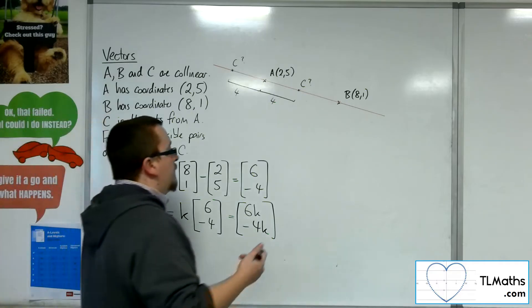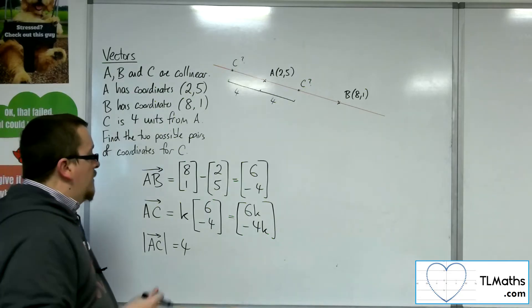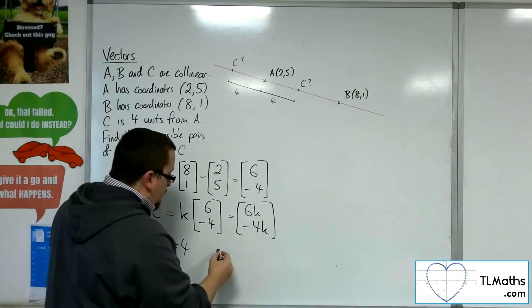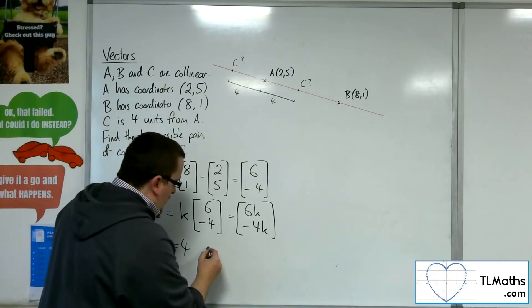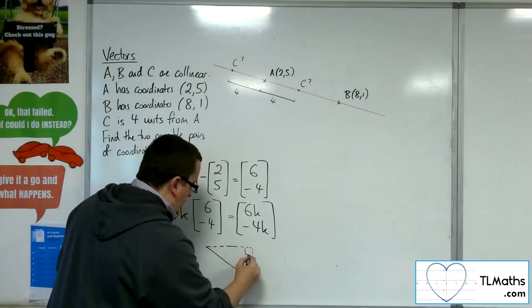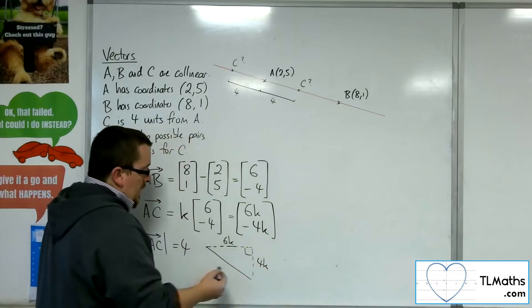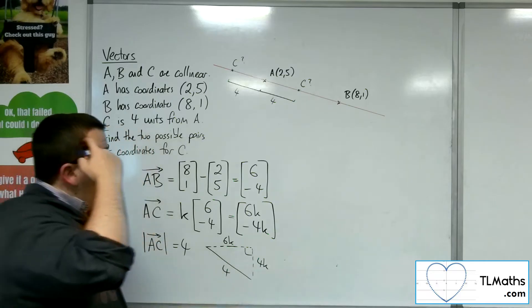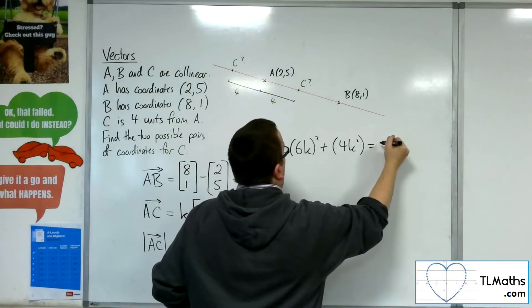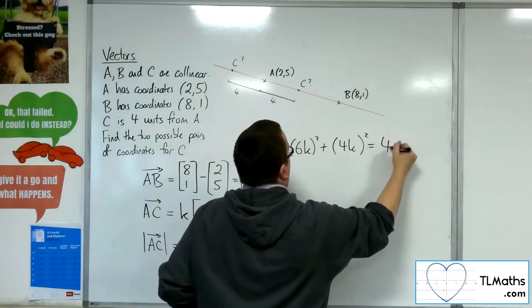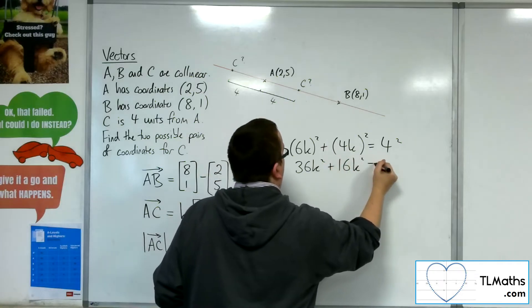So what I know is the length of A, C must be 4. So I'm going to use that fact. Because A, C is 6K along and 4K down, I can use Pythagoras on that. So if, for example, it's going down this way, this is presupposing that K is positive. It would be a right-angled triangle where I'm going 6K along and 4K down. And so this would have to be 4, so that 6K squared plus 4K squared would have to be 4 squared by Pythagoras.